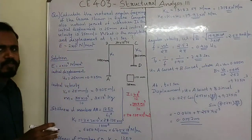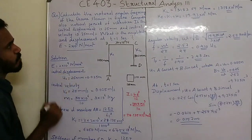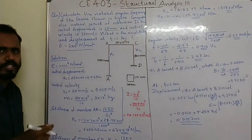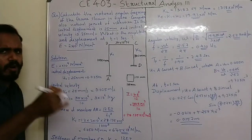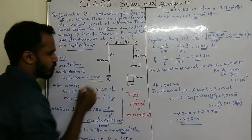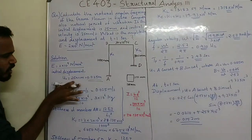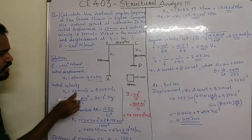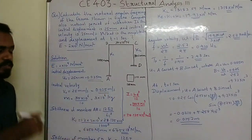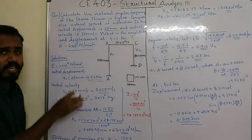E is equal to 2 into 10 raised to 4 newton per mm². That is the E value. Initial displacement is 0.025 meters. The initial velocity is 25mm per second, which is equal to 0.025 meters per second.